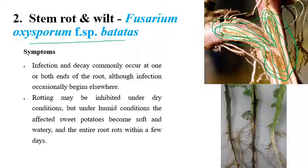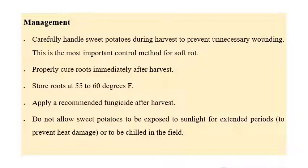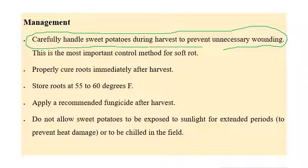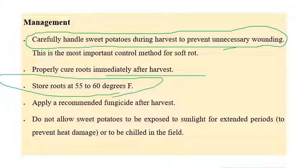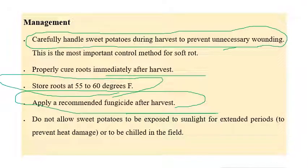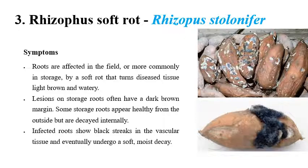For management of stem rot or wilt, unnecessary wounding should be prevented — this is one of the most important control methods. Proper cutting of roots at harvest and storing tubers at an exact temperature of 55 to 60 degrees Fahrenheit is recommended. Application of recommended fungicides after harvest is important. Also, avoid direct exposure to sunlight for extended periods, and avoid chilling conditions in the field.